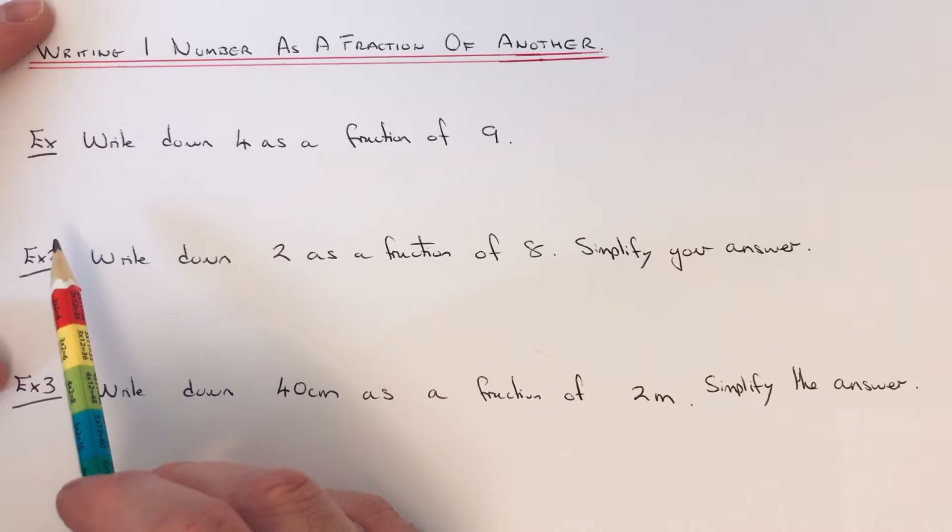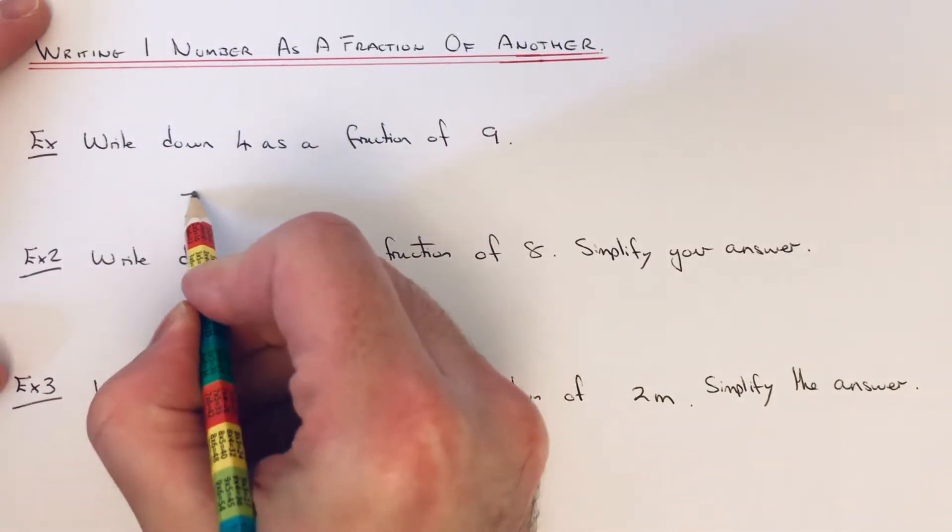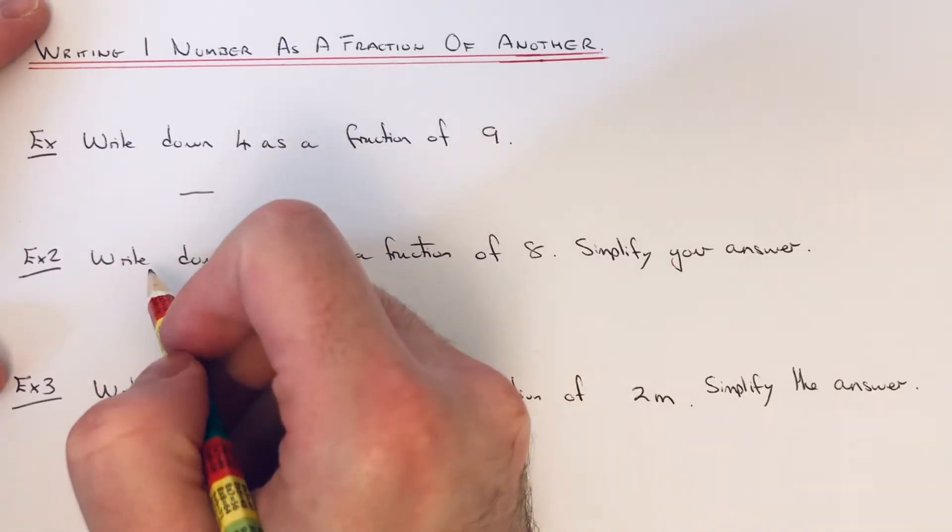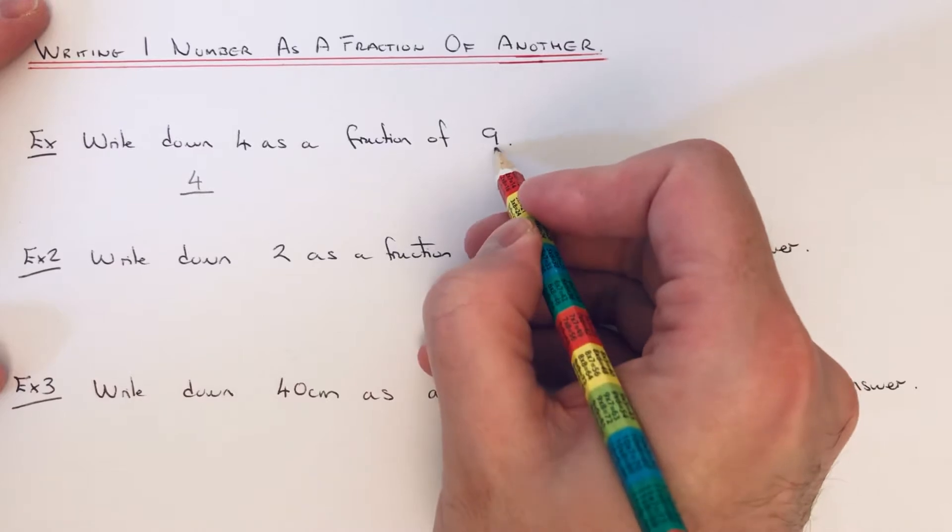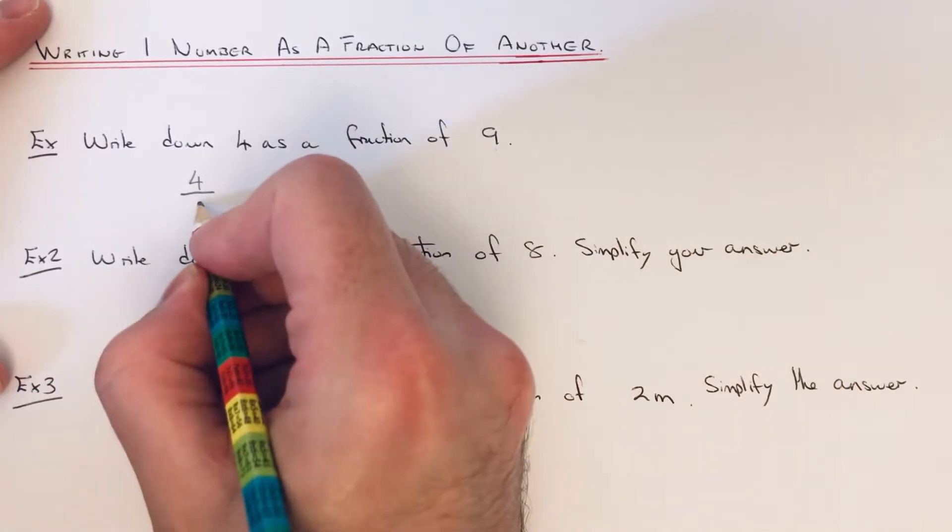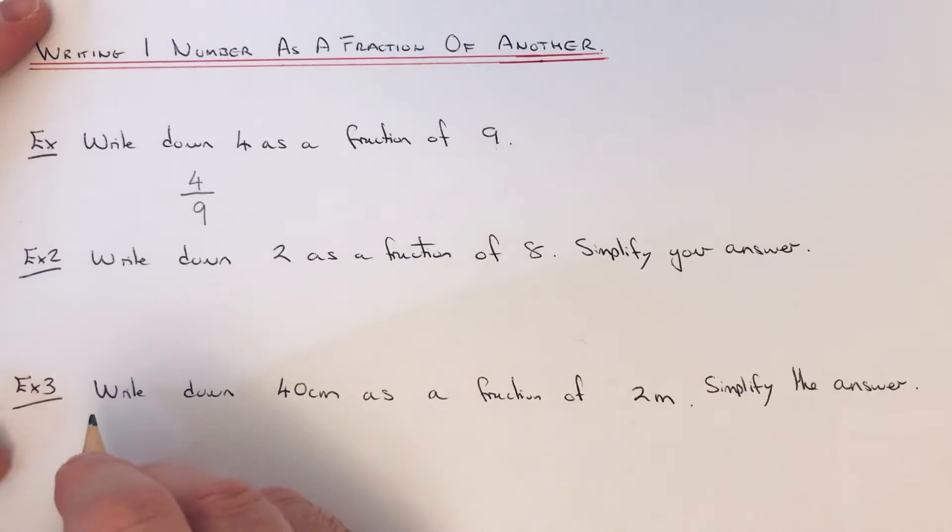We've got to write down 4 as a fraction of 9. To do this, you just need to put the first number, 4, on the numerator of the fraction, and on the denominator you're going to put 9. So the answer is four ninths.